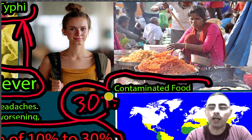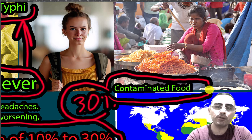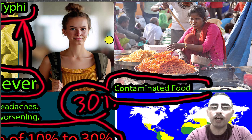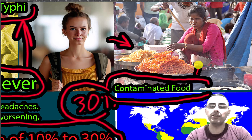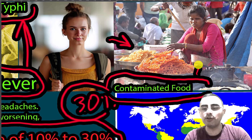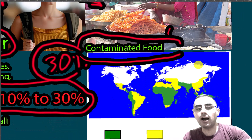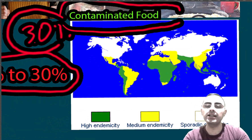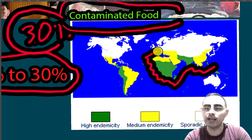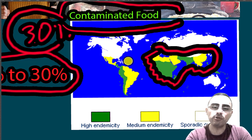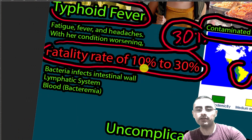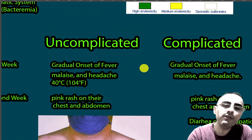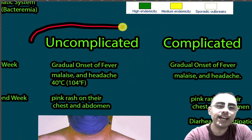The most common transmission route is contaminated food or water, especially if you are a tourist visiting endemic areas. For example, if you are in India and eat street food, you should be very careful because you can get infected by typhoid fever. Endemic areas for typhoid fever include Southern Asia, Africa, and South America.